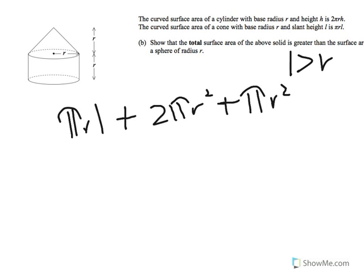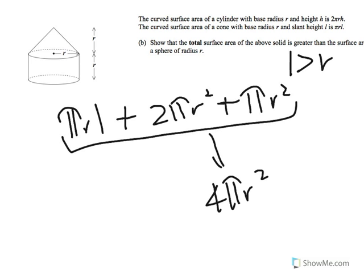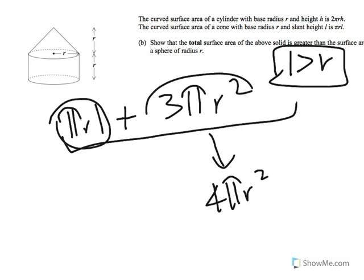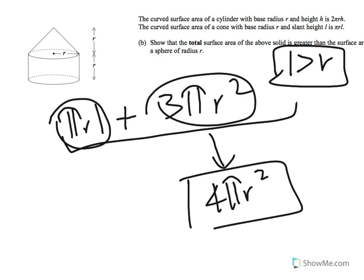The surface area of a sphere with radius R is 4 pi R squared. The total surface area of the solid is pi R l plus 2 pi R squared plus pi R squared, which is pi R l plus 3 pi R squared. Since l is greater than R, this total should be greater than 4 pi R squared.